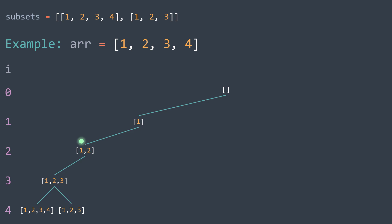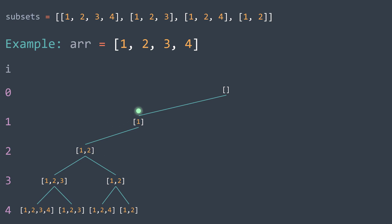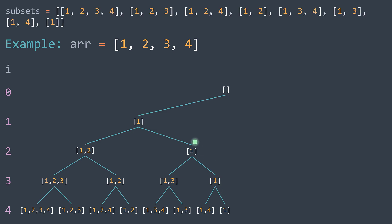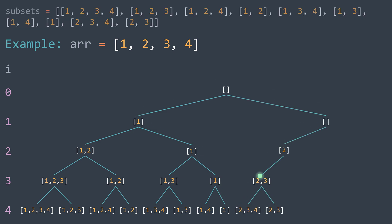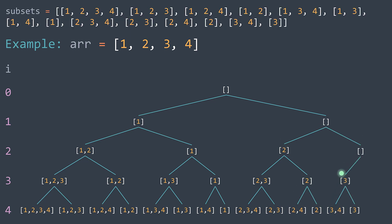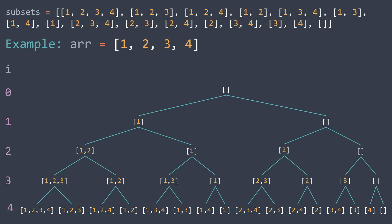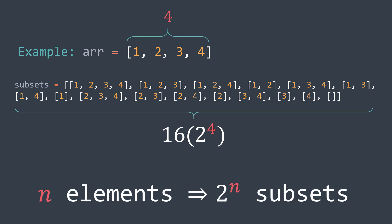Now we've seen what happens when we take three, so we call again but by not taking it. Here we call by taking four — base case. We call by not taking four — base case. We backtrack and also backtrack because we've seen both cases. I'll just let the animation continue. You can see that we got all the subsets — we got 16 because an array of n elements has 2^n subsets, and 2^4 is 16.